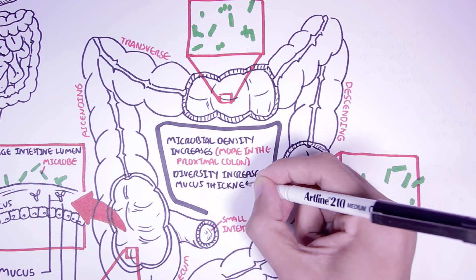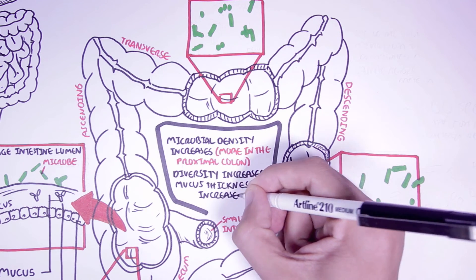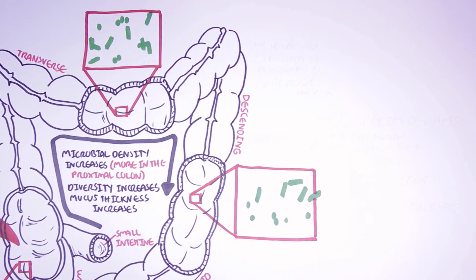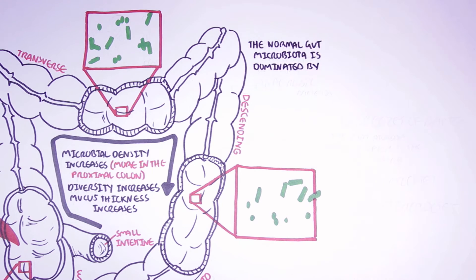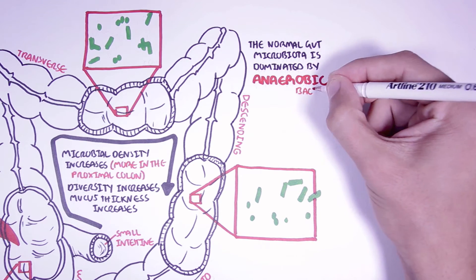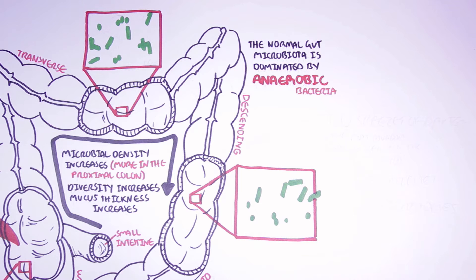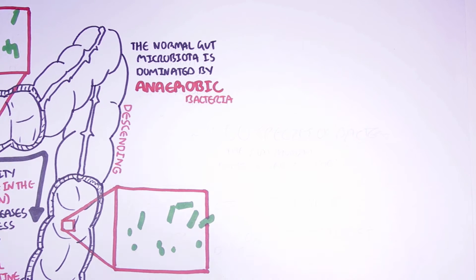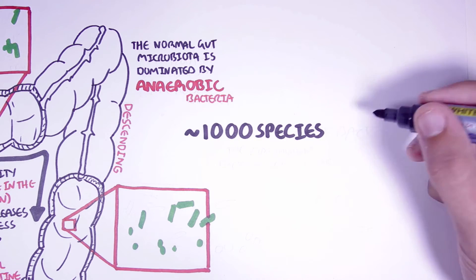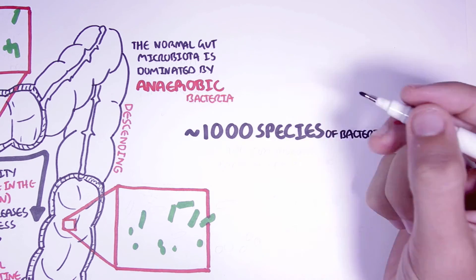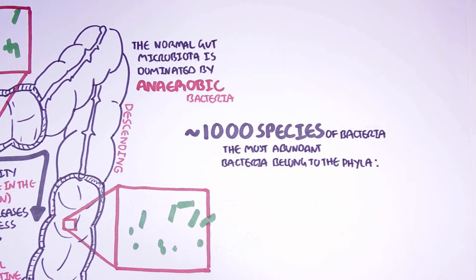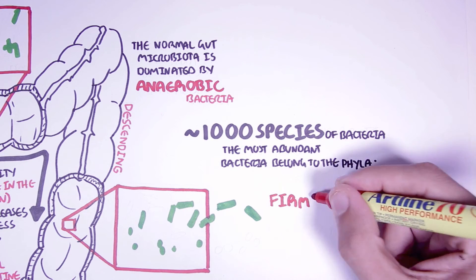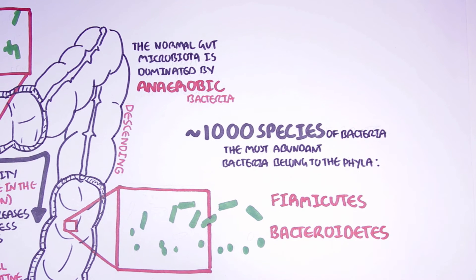With the increase in bacterial diversity and density, there is also an increase in mucus thickness. The normal gut microbiota is dominated by anaerobic bacteria, but there are some aerobic and facultative anaerobic bacteria found in the intestine. In total, there are up to 1,000 species of bacteria living in our gut, that interestingly only belong to a few known bacterial phyla. The most abundant bacteria come from the phyla Firmicutes and Bacteroidetes.